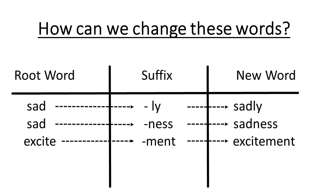How can we change these words? Firstly, we need a root word. We can then change the word by adding a suffix, and this will create a new word. For example, our root word would be 'sad'. Adding the suffix '-ly' would create the new word 'sadly'. Again, using the root word 'sad' and adding the suffix '-ness' would create the new word 'sadness'.